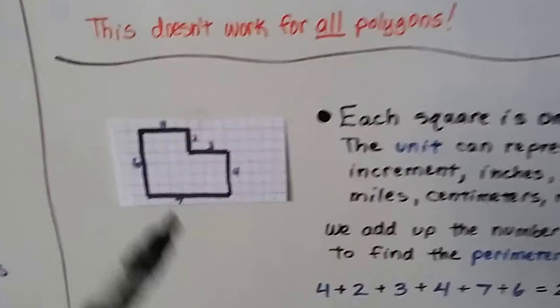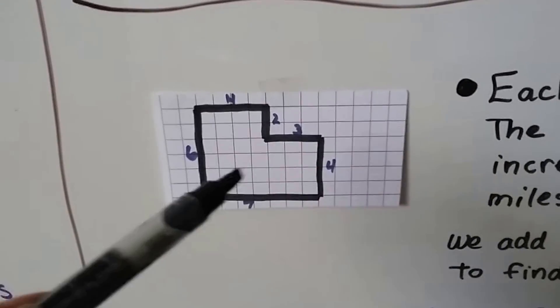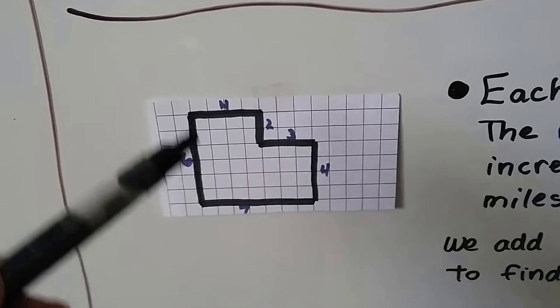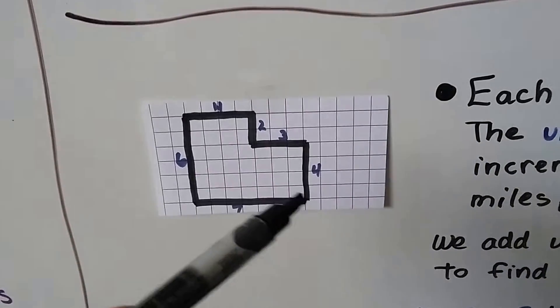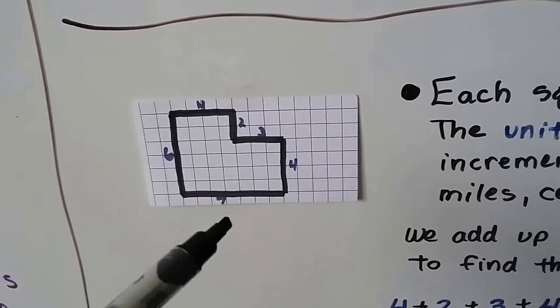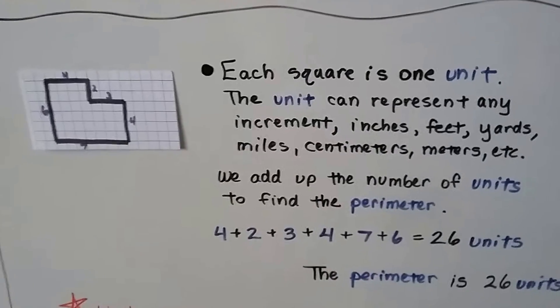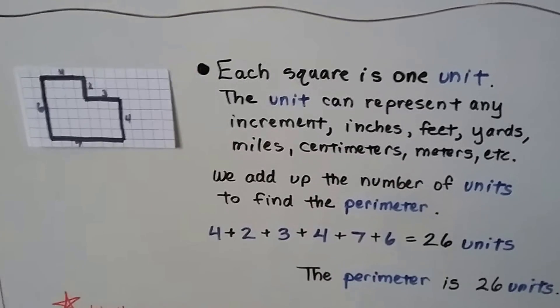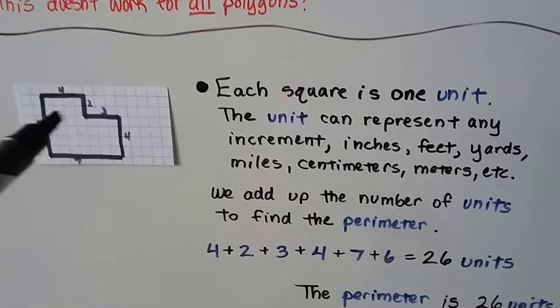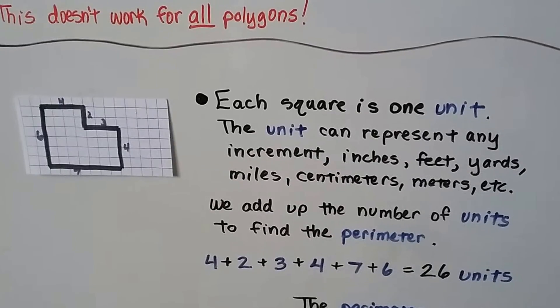So I want you to take a look at this. I teach this in grade school. We've got this grid paper, and we've got a perimeter drawn around these squares. We got a 4, a 2, a 3, a 4, a 7, a 6, and each square is one unit. And the unit can represent any increment. Inches, feet, yards, miles, centimeters, meters, so on, kilometers. It doesn't matter. They're just considered units. And we can add up the number of units to find the perimeter.